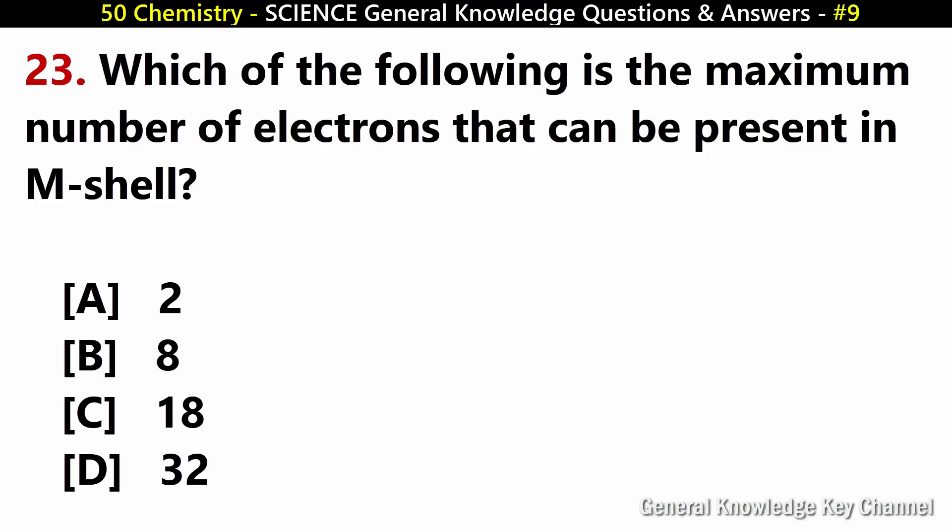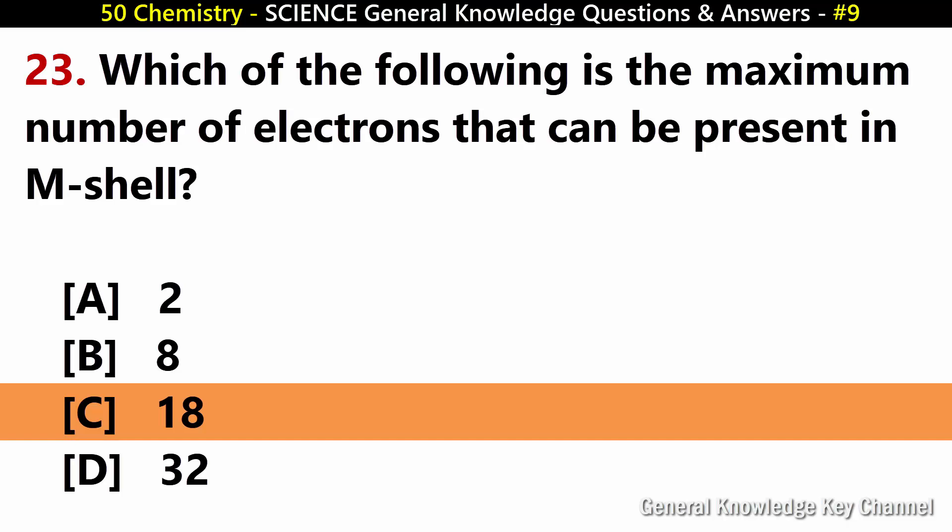Which of the following is the maximum number of electrons that can be present in the M-shell? Answer C: 18.